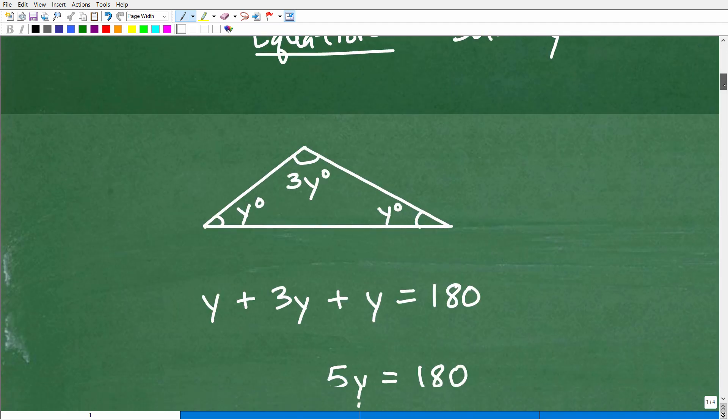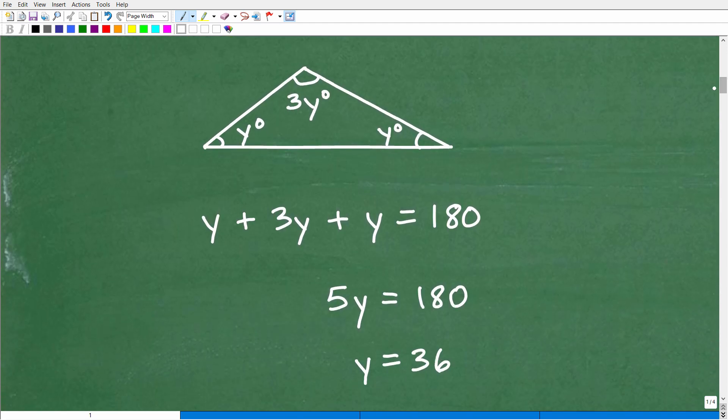Okay, so here we go. Here is our lovely triangle. And again, we know that the sum of the angles of any triangle is 180 degrees. So this plus this plus this, these are angles, it's going to add up to 180. So I'm going to say y, I don't need to have that degree symbol there, I can just kind of drop that. But y plus 3y plus this y is equal to 180 degrees. So this is the equation that you want to construct.